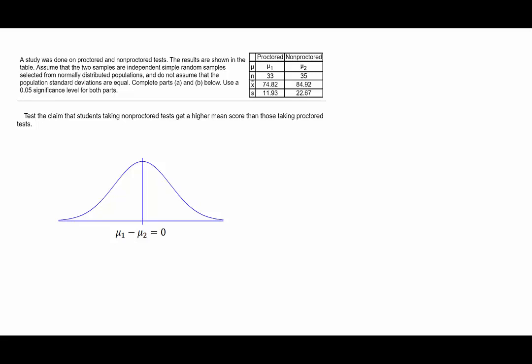The non-proctored group is group 2. So if this value is larger than the mean for group 1, that difference would be negative. If it's 0 in the middle, then it would be negative to the left. So our critical value would be placed to the left of the mean for the distribution. Alpha, which we are told is to be 0.05, would be placed entirely in the left tail of this distribution.